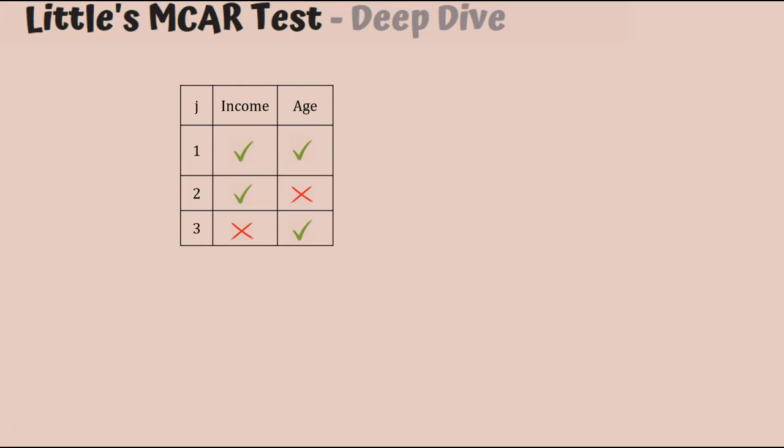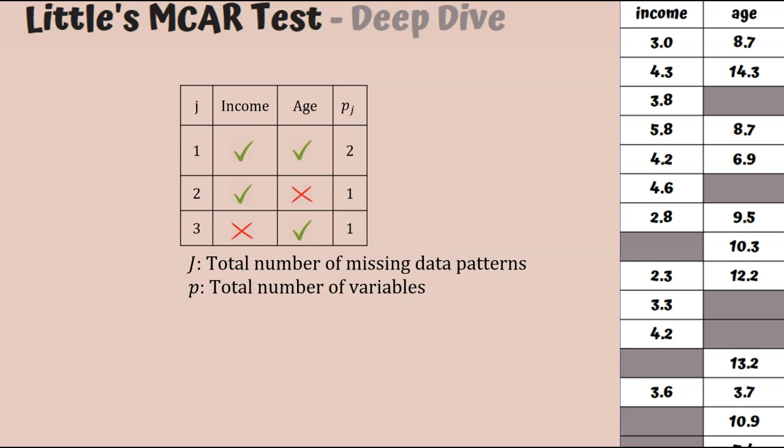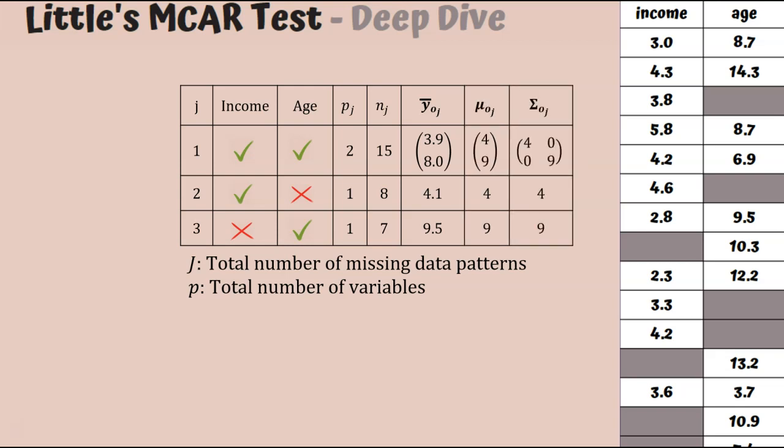Now, I'm going to write down a bit more information about each of these patterns, keeping in mind this example. So little j is the index of the pattern and capital J is the total number of patterns we have in our data. So for us, this is three. I'm going to denote by pj the number of variables that are observed in each of the patterns. And p is the total number of variables. So here we've got two variables. nj is the number of cats that we have in each of these patterns. And what I'm going to do is write down the sample mean for each variable in each of the missing data patterns. Now, this is a fabricated example. So I can compare these sample means from the data set to the true means. And I can also write down the true variance covariance matrix.